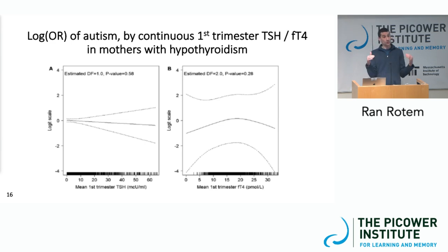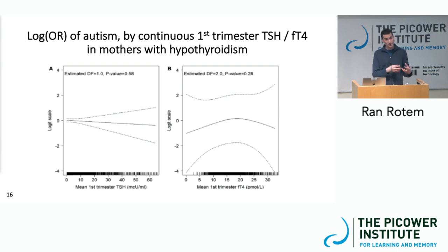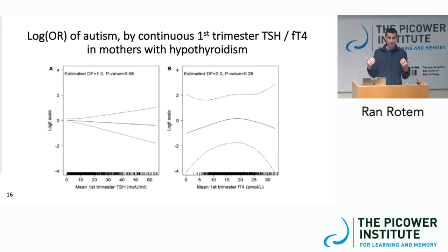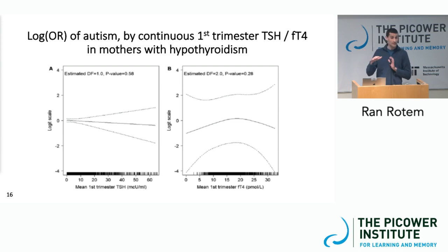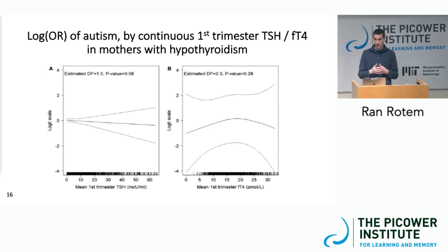We then looked at actual hormone levels during pregnancy in a restricted cohort of about 50,000 births for whom we had actual measurements of thyroid hormones. We examined the association between those continuous measurements and the risk of giving birth to a child with autism. Looking at TSH and free T4 — the two main thyroid hormones typically measured — we see null effects. For both TSH and free T4 during pregnancy, there is no association with autism, which is an intriguing finding.